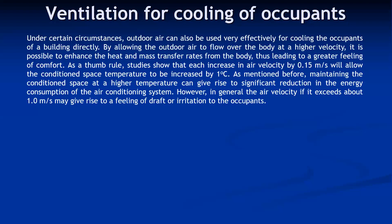So that way we can also reduce energy. This is the thumb rule: if we increase velocity by 0.15 m/s, it allows us to increase the air conditioner set temperature by one degree Celsius. For example, if without a fan the set temperature is 23°C, with a fan the same comfort level can be achieved at 24–25°C, and if the set temperature increases, the load on the air conditioning system reduces. Maintaining the conditioned space at a higher temperature gives significant reduction in energy consumption. However, if air velocity exceeds about one meter per second, it may give rise to a feeling of draft or irritation to the occupant, so generally 0.36 to 0.5 m/s is recommended.